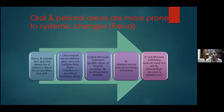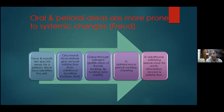Why are there oral manifestations of these disorders? Oral and perioral areas are more prone to systemic changes. The face and mouth are special areas since the face identifies the individual. Circumoral musculature gives sensual satisfaction from early childhood — from suckling, to thumb sucking and lip sucking, to pencil chewing in adolescence, and erotic stimulation in adulthood. Our oral and perioral areas have a lot of significance, so anything going wrong systemically is expressed in the oral cavity, and vice versa.